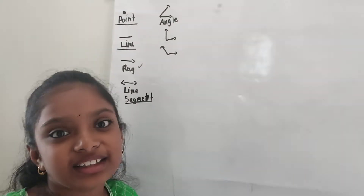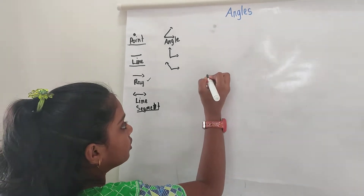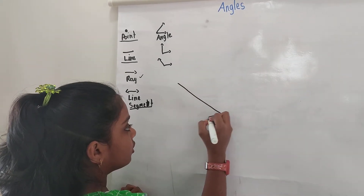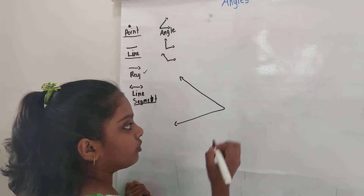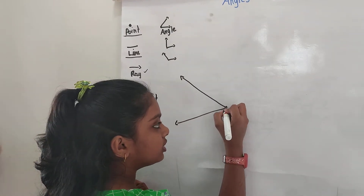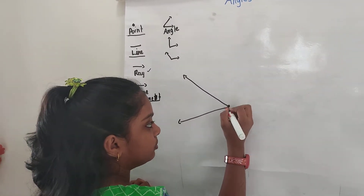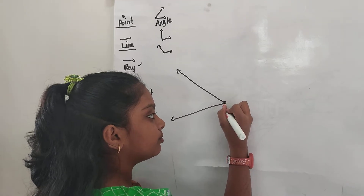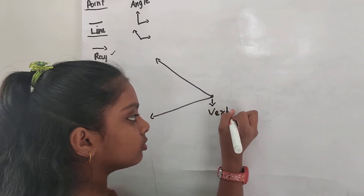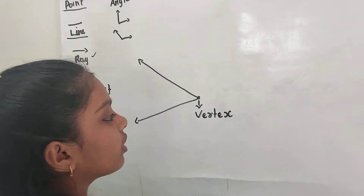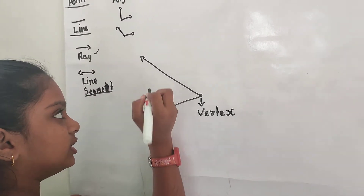Now, let us see the parts of an angle. This is an angle. This is a vertex — where these two lines meet, it is called a vertex. These two are known as arms.